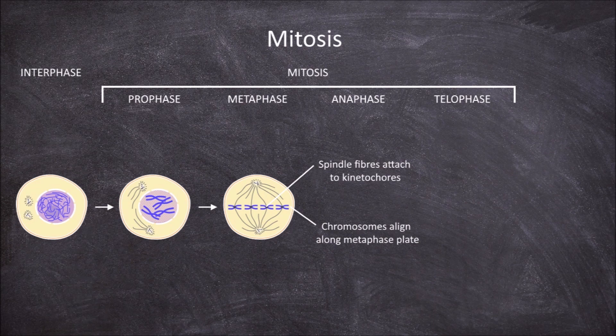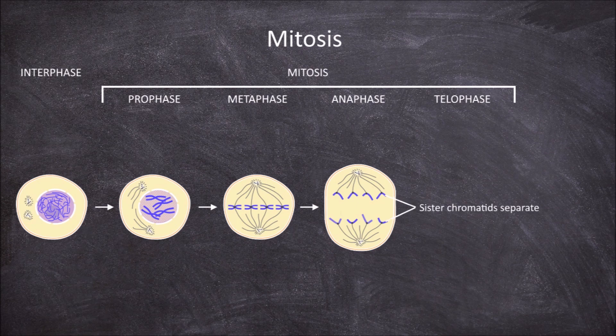The third phase of mitosis is anaphase. During anaphase, the spindle fibres continue to contract and cause the sister chromatids to separate at the centromeres. The genetically identical sister chromatids move to opposite poles of the cell.